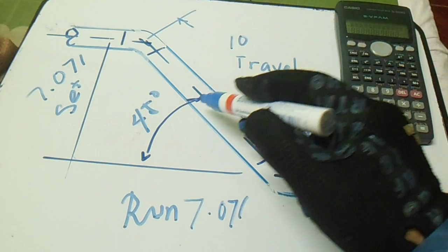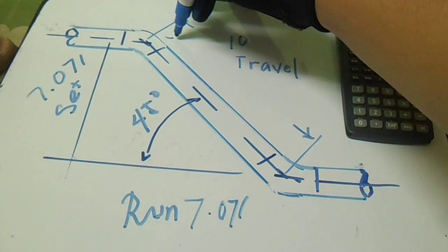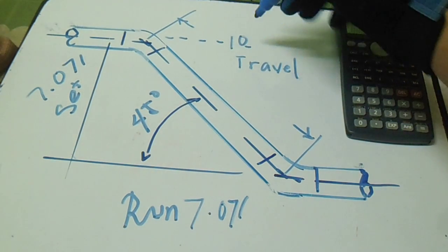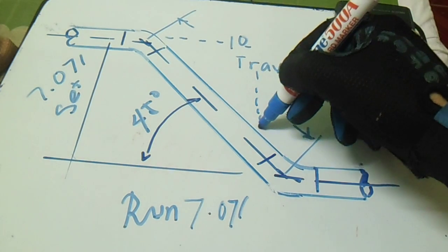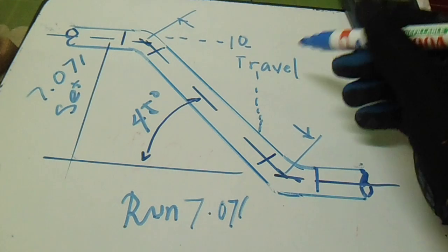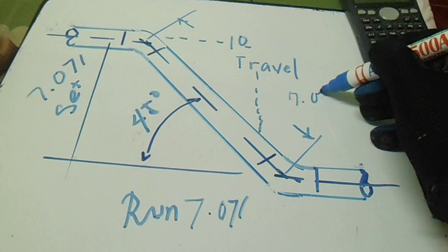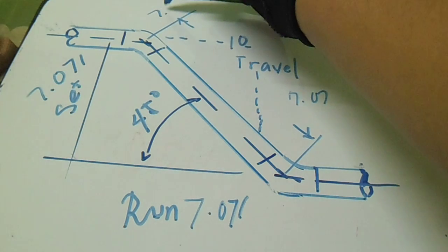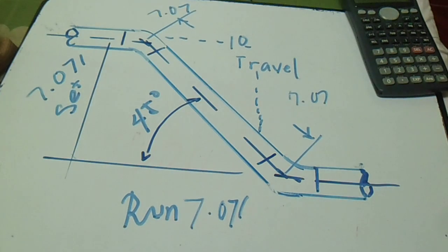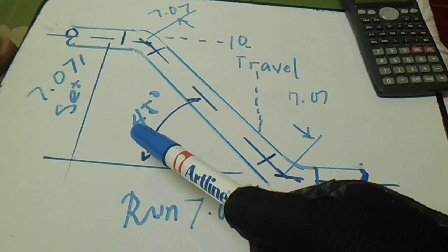Because we have 45 degrees, this is a square. All sides are equal — 7.07, 7.07, 7.07, and 7.07. So this is how to compute the set using the given travel at 45 degrees, and the result forms a square shape.